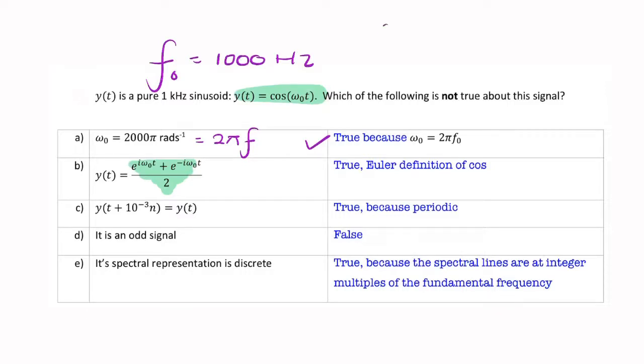Cosine x equals half e to the ix plus e to the minus ix. So that's the Euler definition of cosine. So that is true.